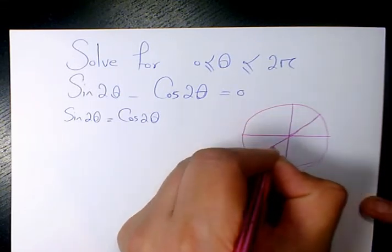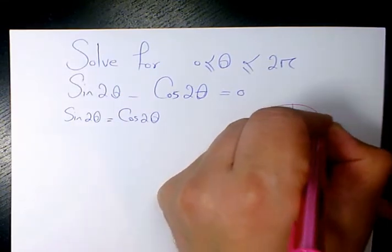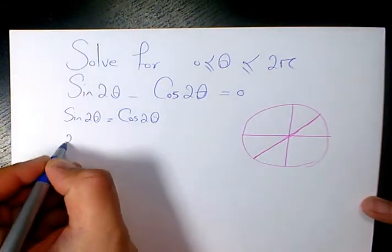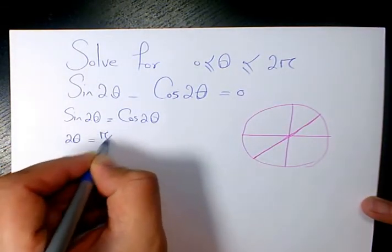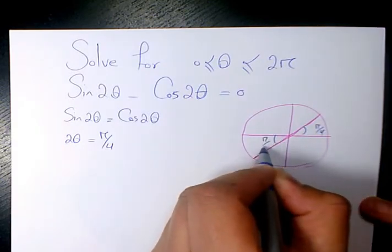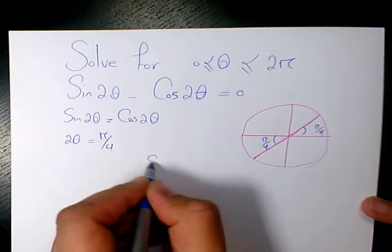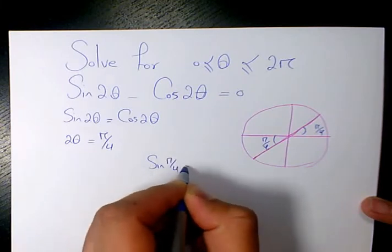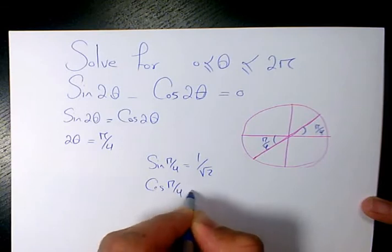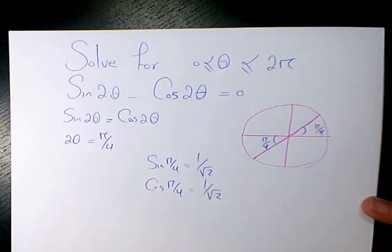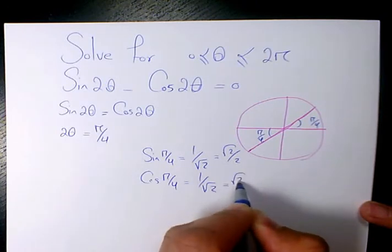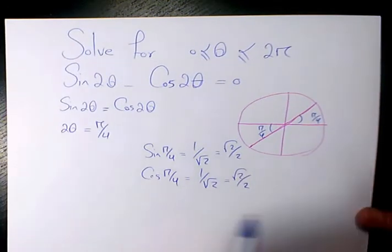And then 2 theta equals to pi over 4. So this one is pi over 4. This area is pi over 4 as well because we know sine pi over 4 is 1 over root 2, cosine pi over 4 is going to be 1 over root 2 as well. Or if you want to normalize it, it's going to be root 2 divided by 2. It doesn't matter which one you choose.